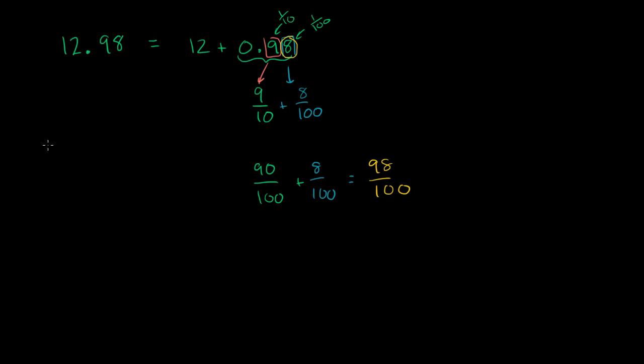So if we just wanted to write it as a mixed number, we could just write it as 12 and, instead of 0.98, 12 and 98 hundredths.